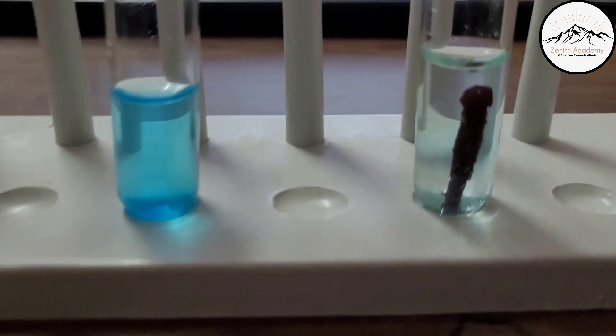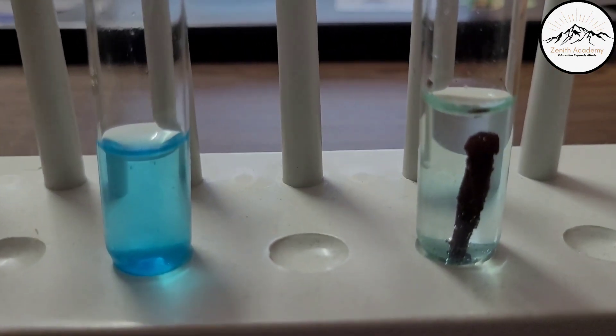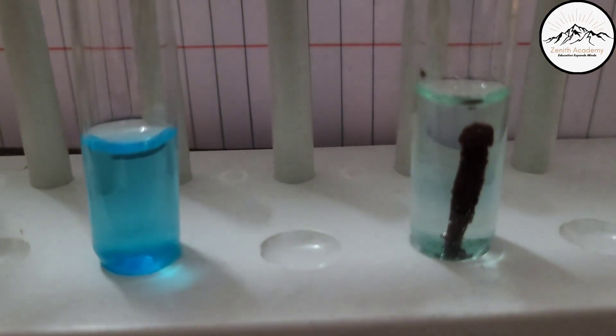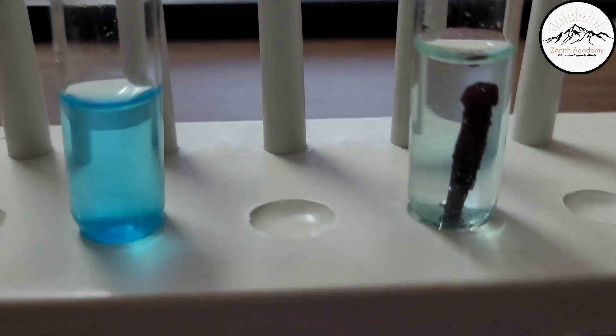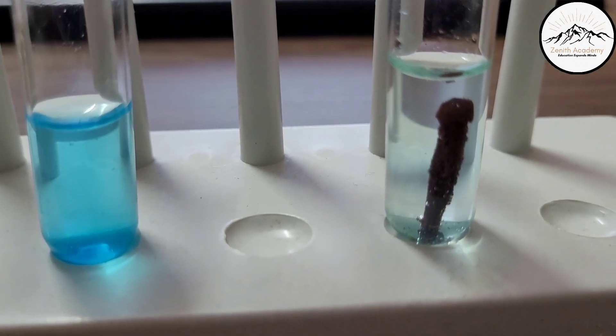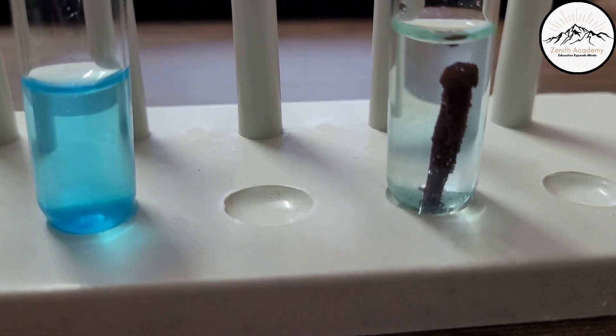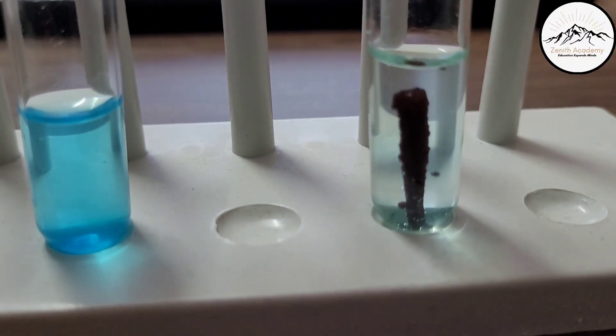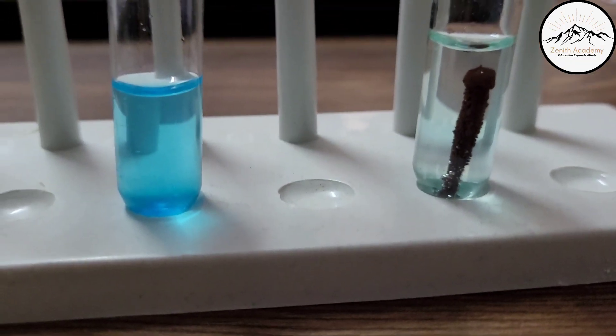Now it is after one hour it looks like this. Can you see? So here I have kept a white page so that you can see this very carefully. Now this blue colored copper sulfate solution has turned slightly into greenish blue. Can you see?